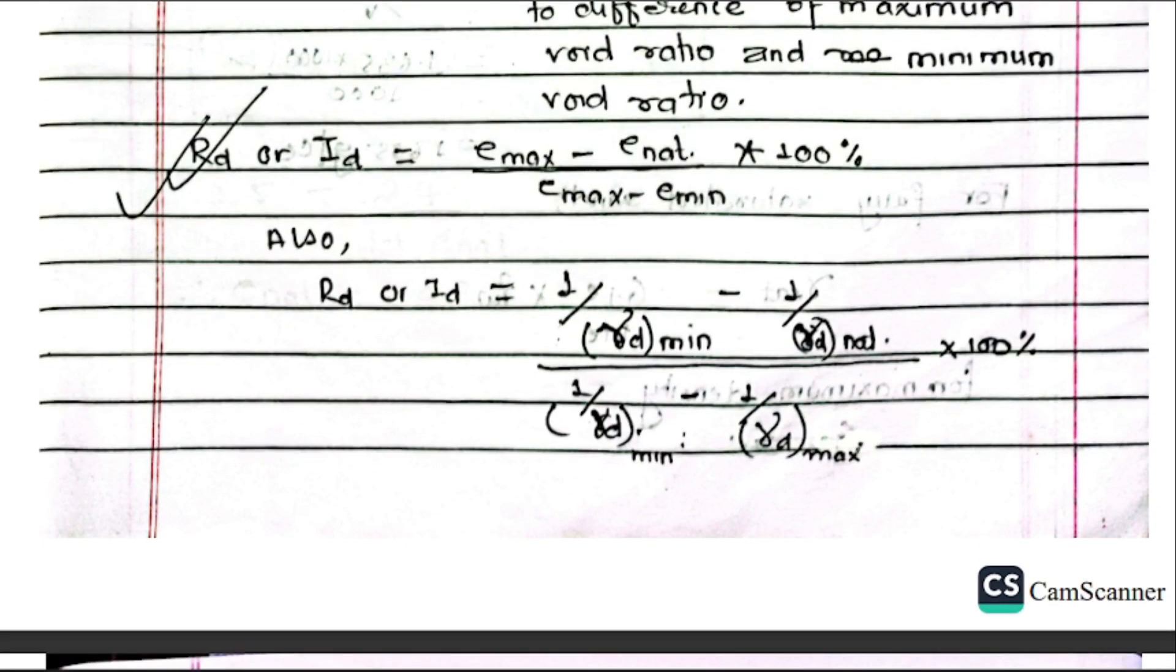The formula is 1 upon gamma d min minus 1 upon gamma d natural upon 1 upon gamma d min minus 1 upon gamma d max into 100 percent.